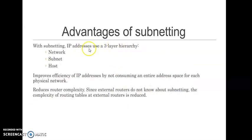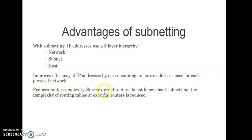The advantages of subnetting are: with subnetting, IP addressing uses a three-layer hierarchy — Network ID, Subnet ID, and Host ID. It improves the efficiency of IP address usage by not consuming an entire address space for each physical network. It also reduces router complexity, since external routers do not know about subnetting and are only concerned with a single network, not how many subnetworks exist within it.